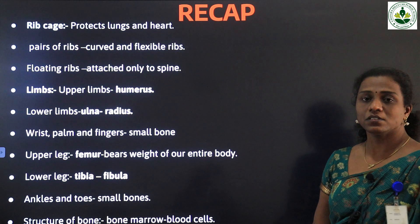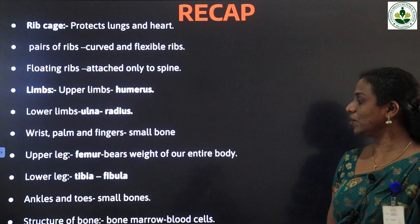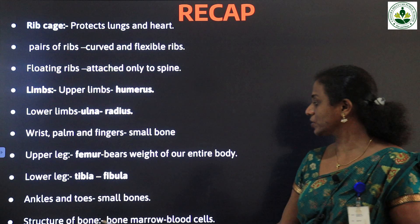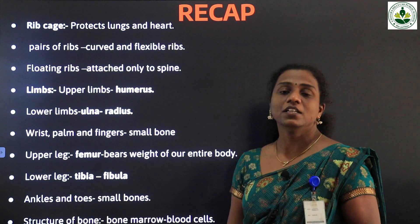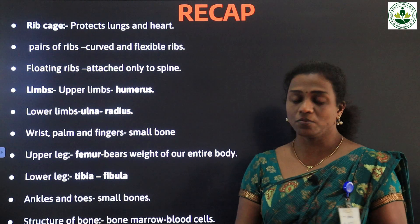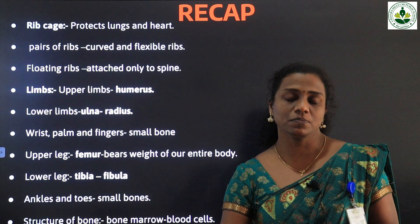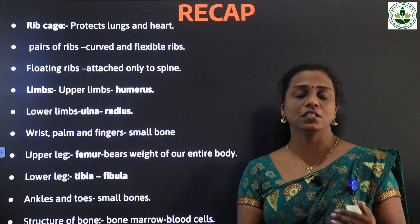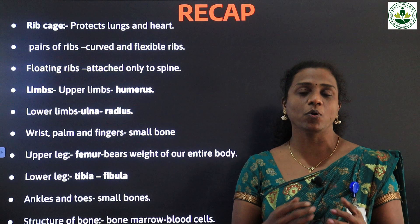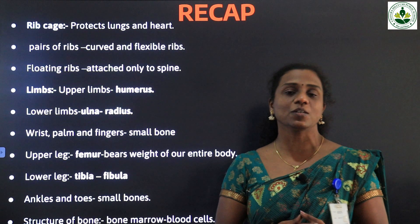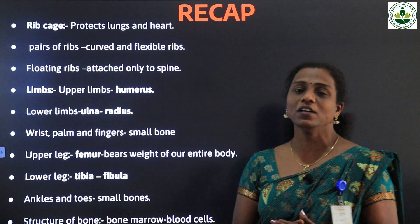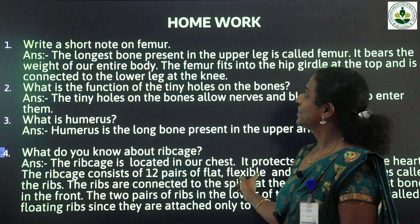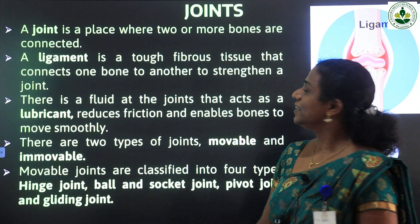Ankles and toes consist of small bones. Then the structure of bone — we also studied that. It consists of bones, and inside the bone a spongy jelly-like substance is there; it is known as bone marrow.